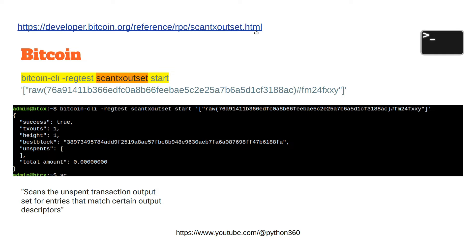There'll be hyperlinks on many of these pages which you can click, and they will take you to the documentation. This is a very popular command — scan txoutset — which scans the unspent transaction output set for entries that match certain output descriptors. So you can scan your node and identify unspent transaction outputs that you could potentially spend.